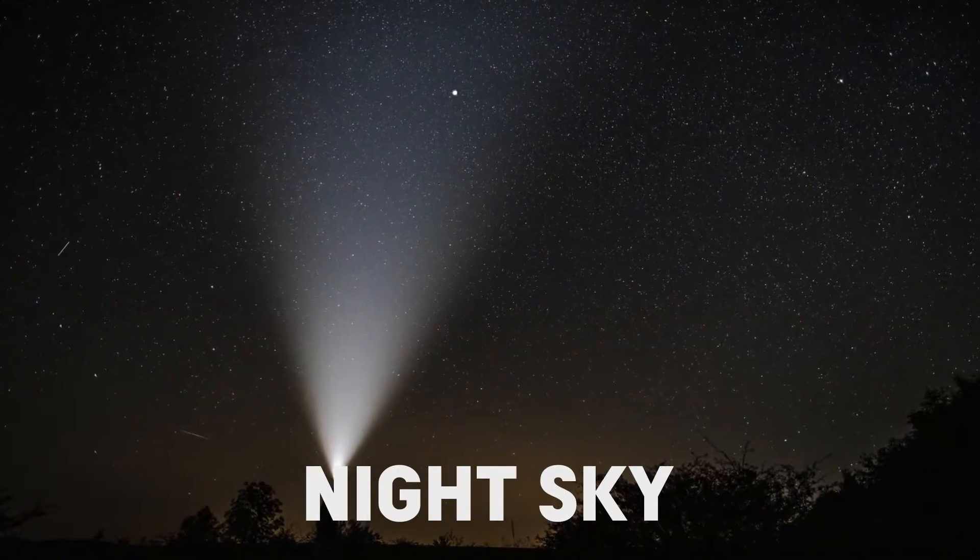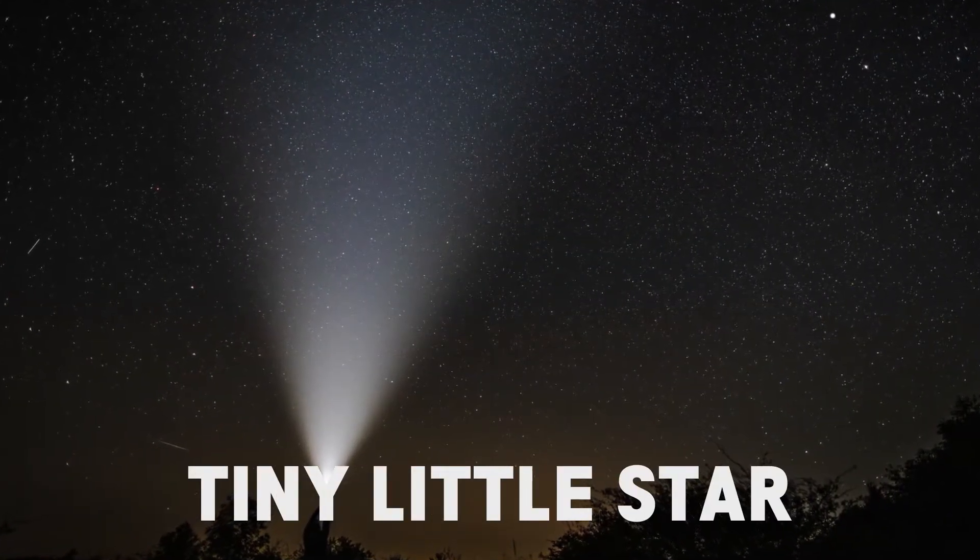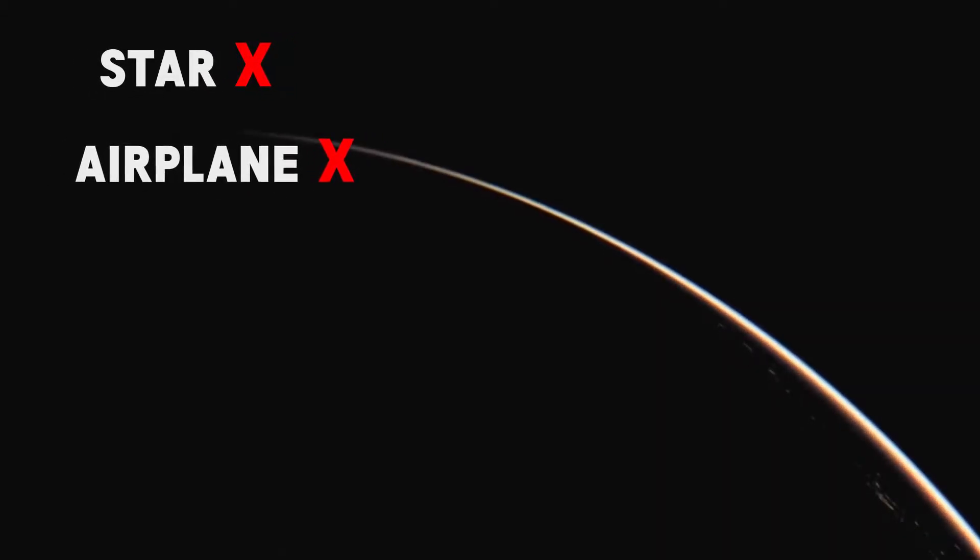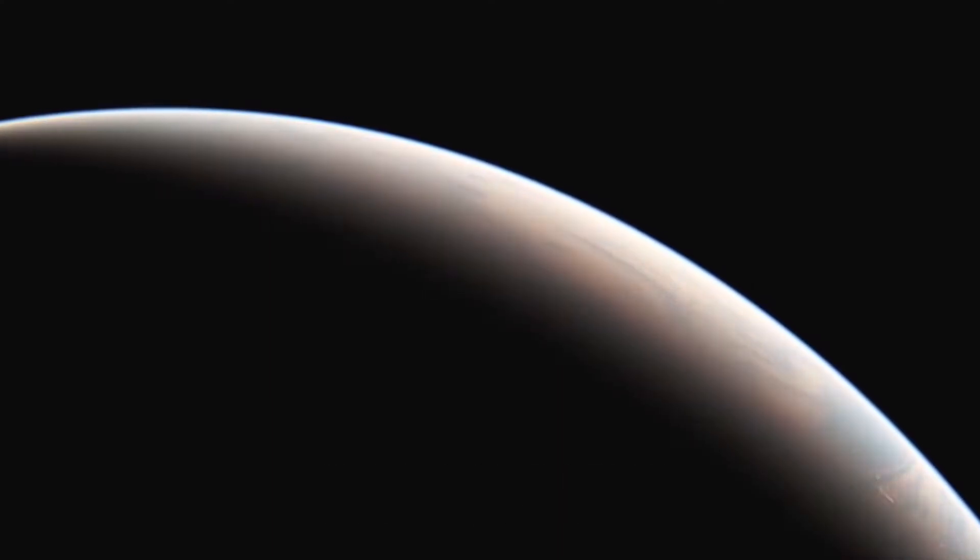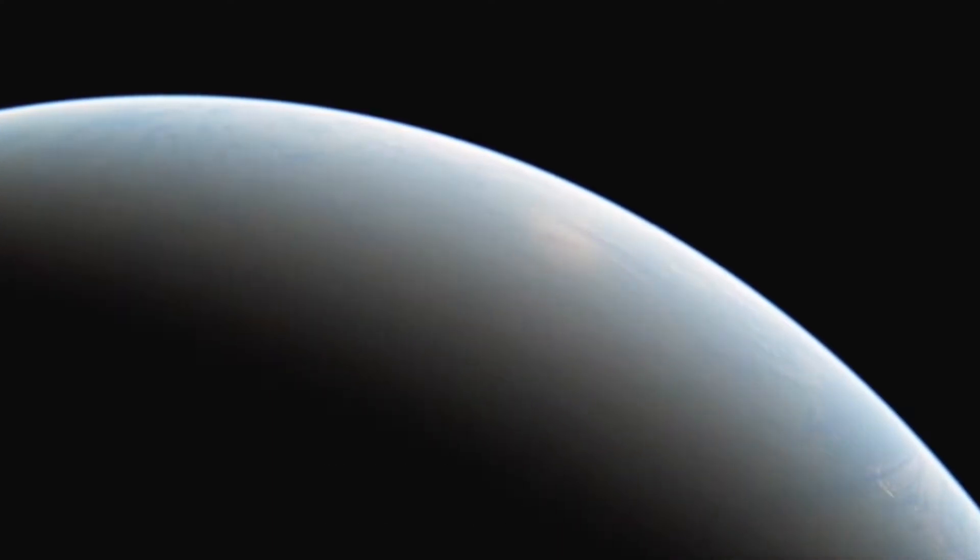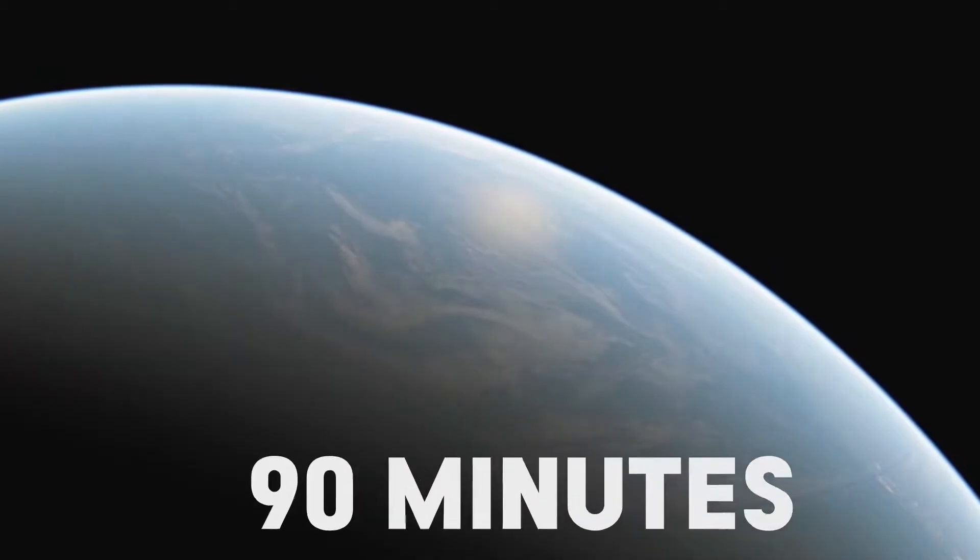Ever looked up in the night sky and spotted a tiny little star moving? Well, it's not a star or an airplane. It's a satellite orbiting the Earth at the speed at which it can revolve around in just 90 minutes.